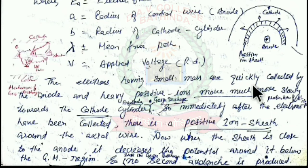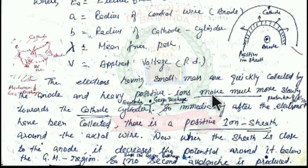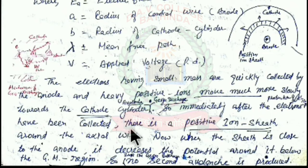The electrons, having small mass, are quickly collected by the anode, while the heavy positive ions move much more slowly towards the cathode cylinder. Immediately after electron collection by the anode, the positive ions have to travel a distance equal to the radius of the cylinder. As a result, they form a positive ion sheath around the axial wire.